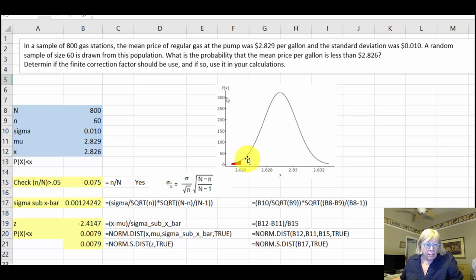Let's check: n divided by N—is that greater than 0.05? Yes, I just put in a formula which is n divided by N, and that is 0.075, which is greater than 0.05. So yes, we need to use the finite correction factor.